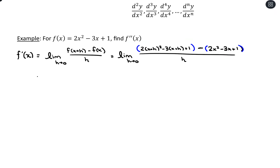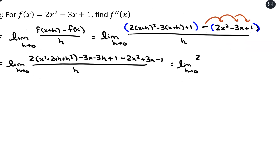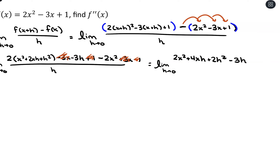Then we'll start simplifying. We're going to have 2 times (x² + 2xh + h²) minus 3x minus 3h plus 1, and then subtract minus 2x² plus 3x minus 1. Make sure you're distributing that negative there. All over h.